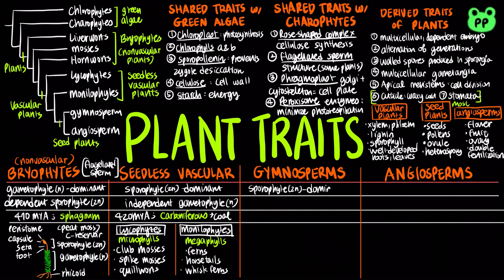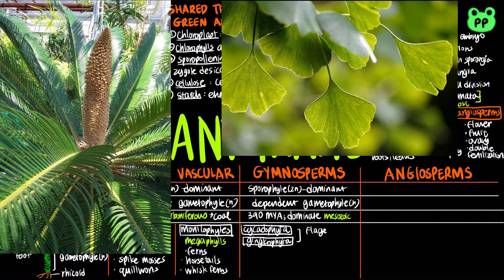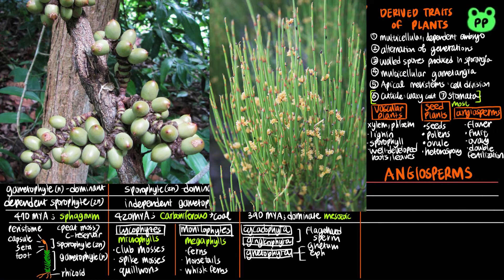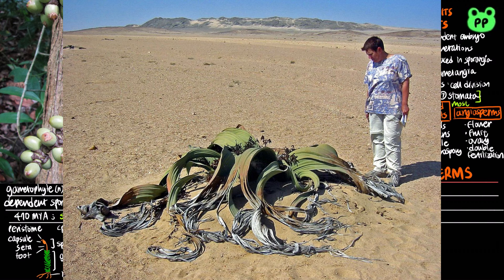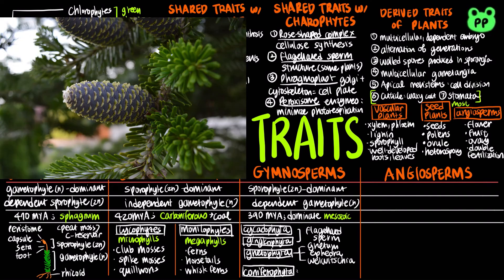All seed plants are sporophyte dominant, and their gametophytes are microscopic and dependent on the sporophyte. Gymnosperms date back to 390 million years ago and dominated the Mesozoic era. They include four groups. Cycadophyta, or cycads, and Ginkgophyta, or ginkgos, still retain flagellated sperm. Cycads have large cones and palm-like leaves, whereas ginkgo has fan-like leaves that turn gold in autumn. Gnetophyta has three groups: Gnetum, which includes tropical trees, shrubs, and vines; Ephedra, which are desert shrubs that produce ephedrine, used medicinally as a decongestant; and Welwitschia, found in the deserts of southwestern Africa and containing the largest leaves known. Coniferophyta is the largest group of gymnosperms; most species have woody cones, and it includes pines and redwood forests.